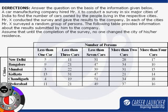Coming to the first set of questions, that is question 26 to 30 in the DI section of mock test 1. This set is basically about a person Mr. X who conducts a survey to find the number of cars in 6 major cities of India. Arguably, this is the most easiest set in the whole DI section.